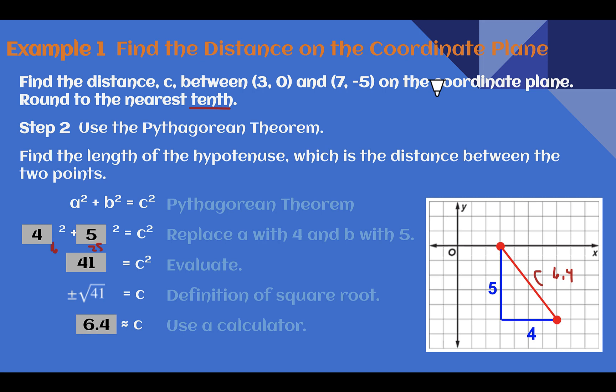So again, all I did was create a triangle, count how long my legs are, and then use the Pythagorean theorem to find the hypotenuse, which is the distance between those two points. So after all that, the points were 6.4 units apart.